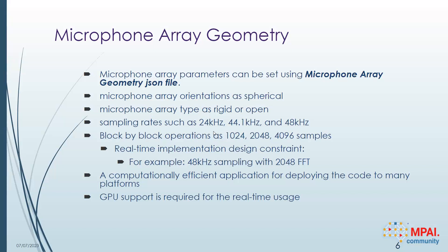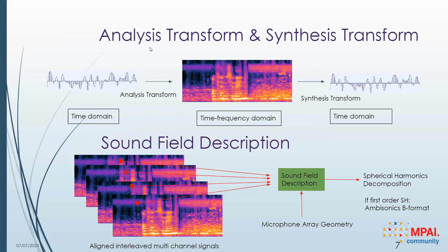Let me introduce the AIMs. First, there are signal processing blocks: analysis transform and synthesis transform. One is the FFT block and the other is the inverse FFT block. When we capture time-domain multi-channel signals with the analysis transform, we obtain time-frequency domain signals. By using the synthesis transform, we can create time-domain signals back. For the sound field description: when we get the time-frequency domain multi-channel interleaved signals, we capture aligned time-frequency beams and the microphone geometry to describe the sound field.